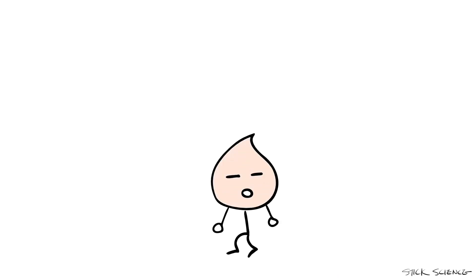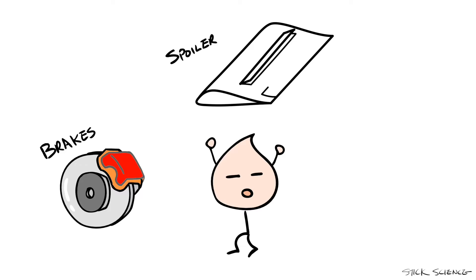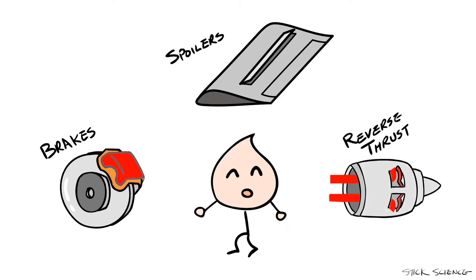Three mechanisms are involved when pilots try to stop a plane after landing. One, the brakes on the wheels, obviously. Two, the spoilers on the wings. And three, reverse thrust created by the engine.